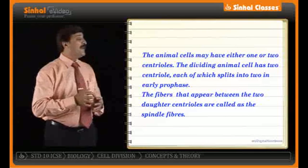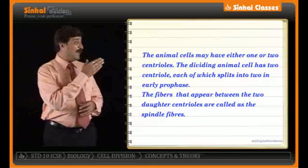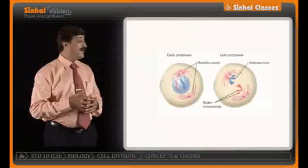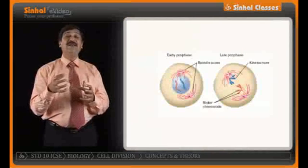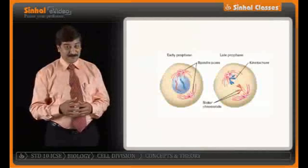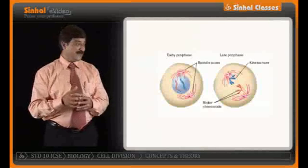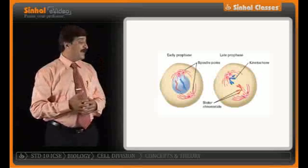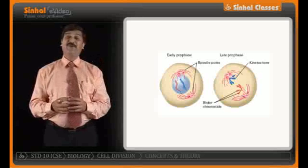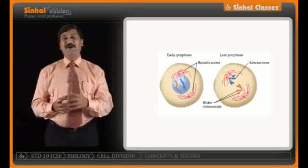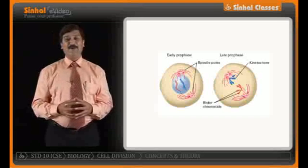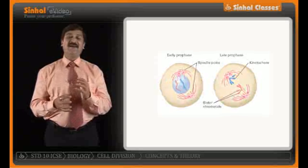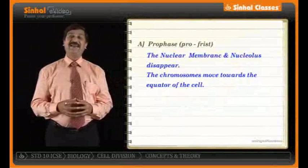The fibers that appear between the two daughter centrioles are called spindle fibers. As seen on the monitor, the nuclear membrane and the nucleolus are disappearing, and the chromosomes move towards the equator. You can clearly see the spindle fibers and centrioles in both early and late prophase.